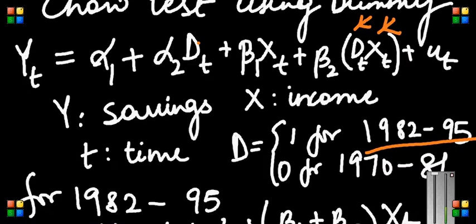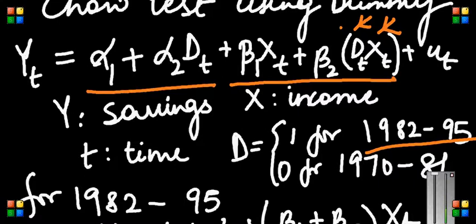Okay, so I am going for this Chow test. Why is Y_t = α_1 + α_2 D_t + β_1 X_t + β_2 D_t X_t + u_t? Clearly I would be changing the slope as can be seen from here and I will be changing the intercept as can be seen from here.